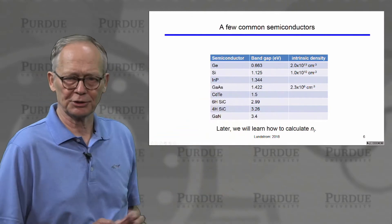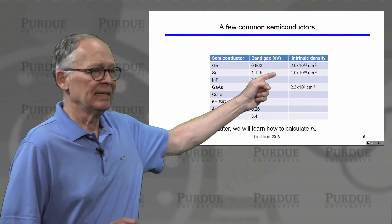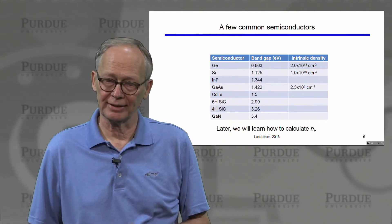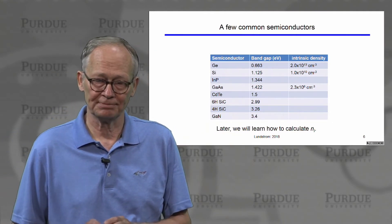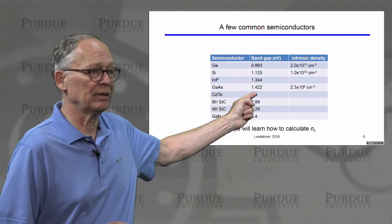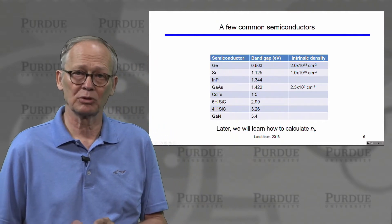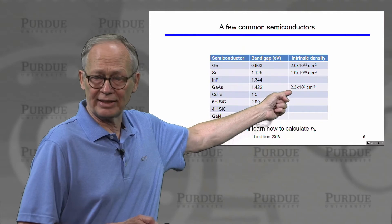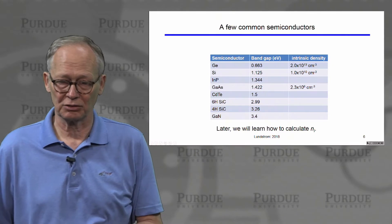So here are a few numbers. Germanium has a band gap of about 0.66 electron volts. It has an intrinsic carrier density of about 2 times 10 to the 13th, 1000 times, more than 1000 times larger than silicon. Silicon we've discussed. Gallium arsenide, for example, has a band gap that's about 3 tenths of an electron volt larger than silicon. And it has an intrinsic carrier density that is almost four orders of magnitude smaller because of that exponential dependence.